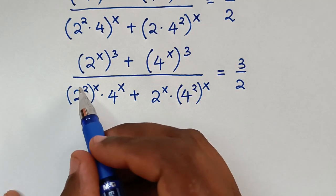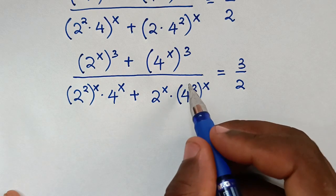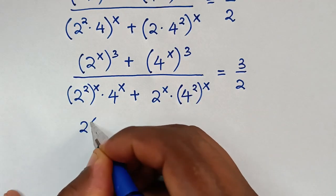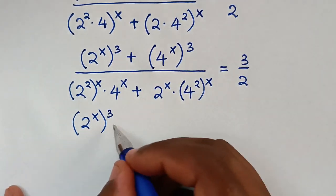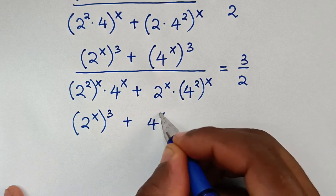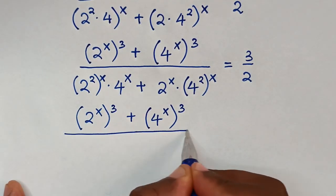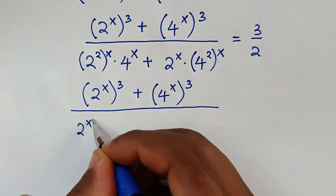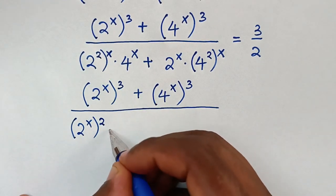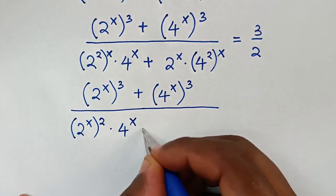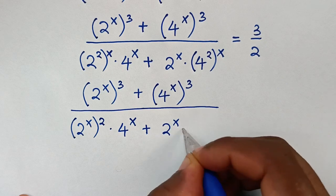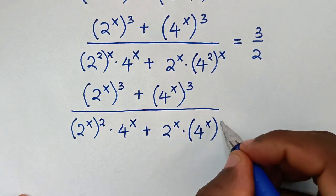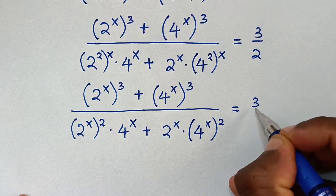Then we take the power of x inside and the power of 2 outside. So the numerator remains (2^x)^3 + (4^x)^3, and the denominator becomes (2^x)^2 · (4^x) + (2^x) · (4^x)^2, equal to 3/2.